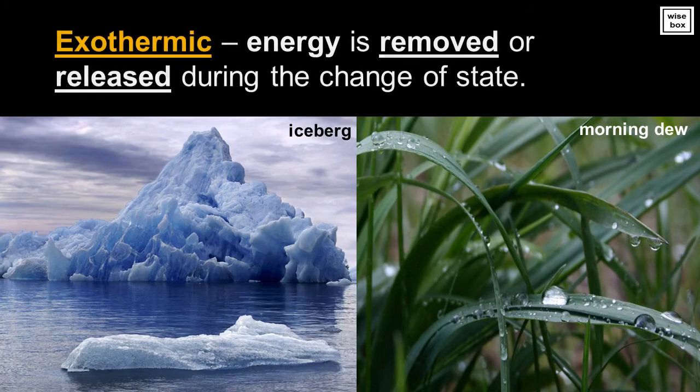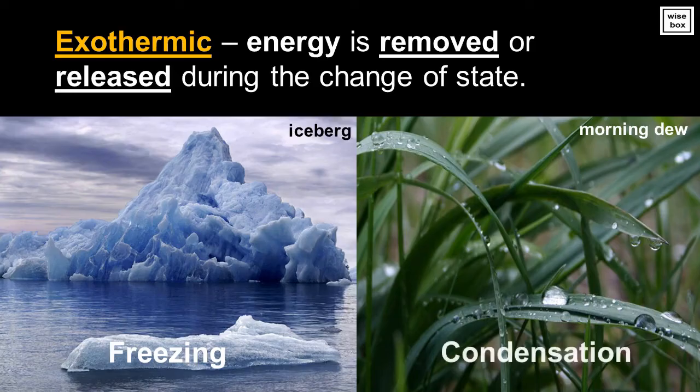In exothermic processes, energy is removed or released during the change of state. Examples include freezing and condensation.